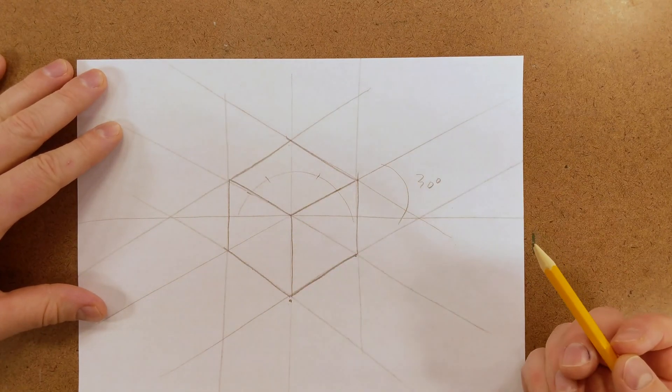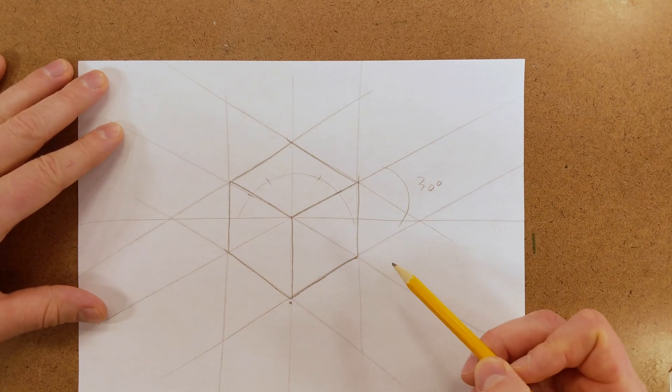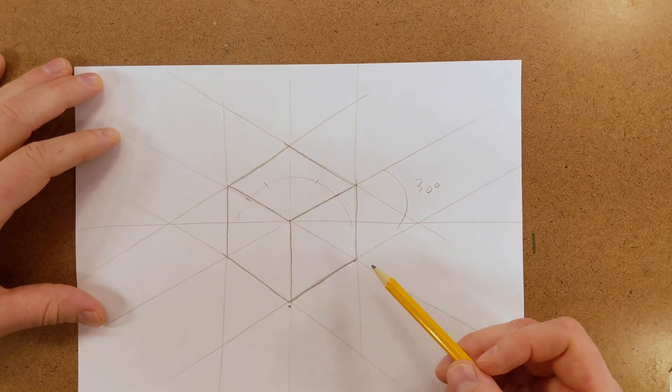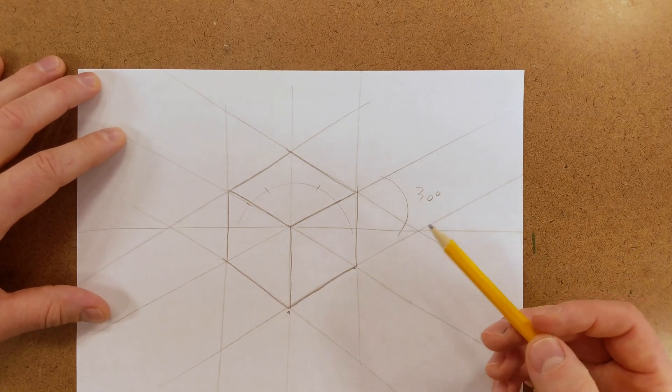In the last video, I showed you how to draw this cube, but what if we wanted to put circles on the sides? Well, it wouldn't be a perfect circle. It would be an ellipse. So how do we draw an ellipse?